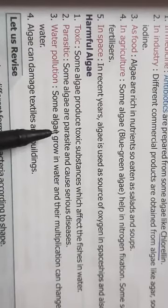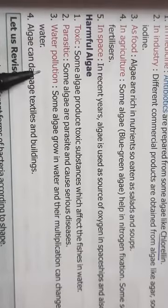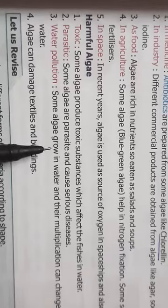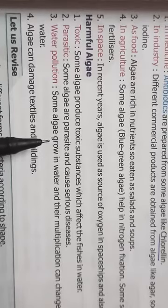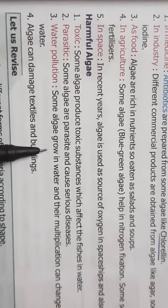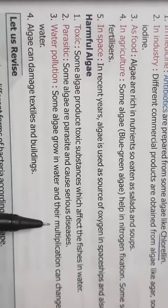Parasite, you all know, which lives in other organisms. Then, water pollution. The algae which grow in water, you all know, you have seen, that is the most common algae which you all must have seen. The algae which grows in water can multiply very fast.